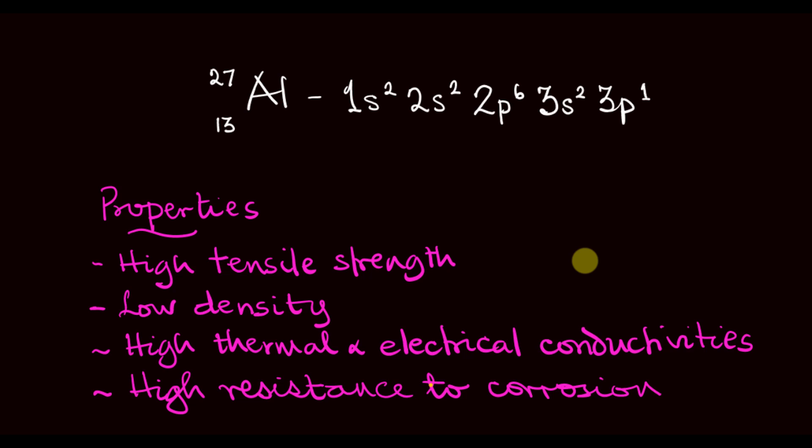This is why it is used for making overhead cables and cooking utensils like pots and kettles. Its low density and high tensile strength, coupled with its high resistance to corrosion, is why it is used for making the bodies of aircraft.